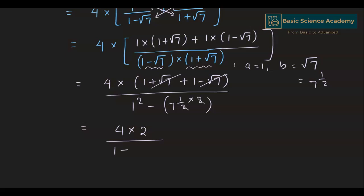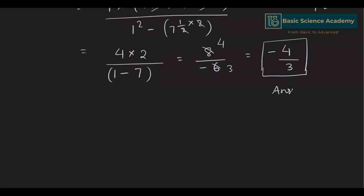This gives us 8 divided by 1 minus 7, which is 8 divided by minus 6. Taking 2 common and dividing gives us 4 and 3, so this is equal to minus 4 divided by 3. Hence the answer is minus 4 divided by 3.